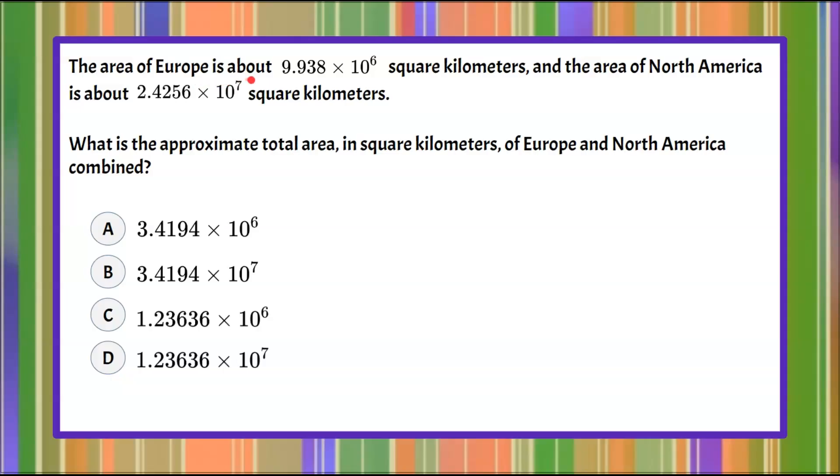The area of Europe is about 9.938 × 10^6 square kilometers, and the area of North America is about 2.4256 × 10^7 square kilometers. We are asked: What is the approximate total area in square kilometers of Europe and North America combined? We're given four answer choices.